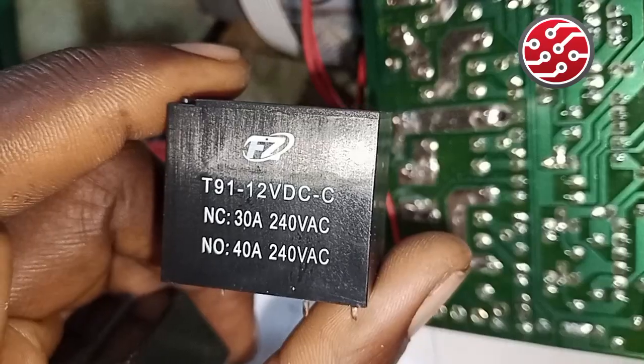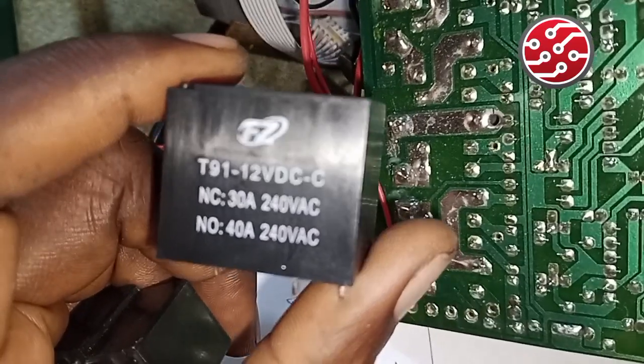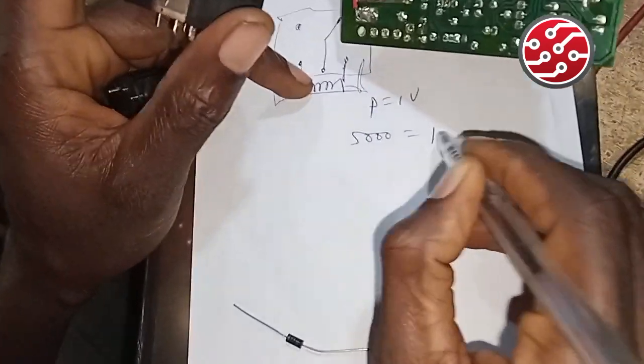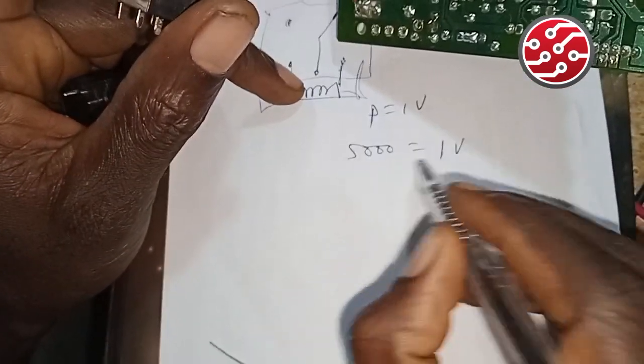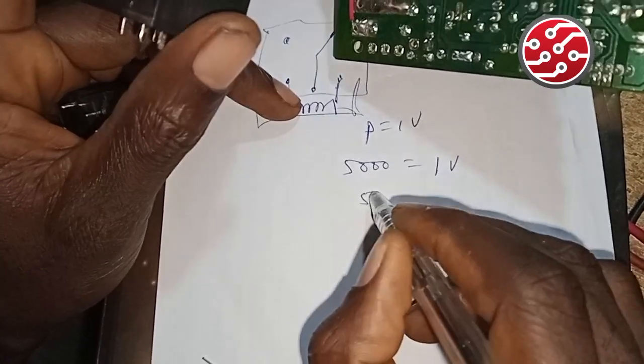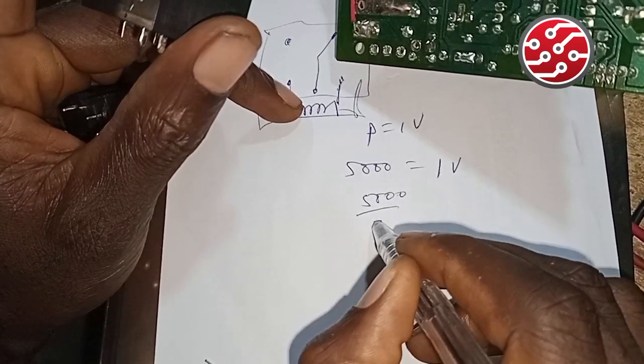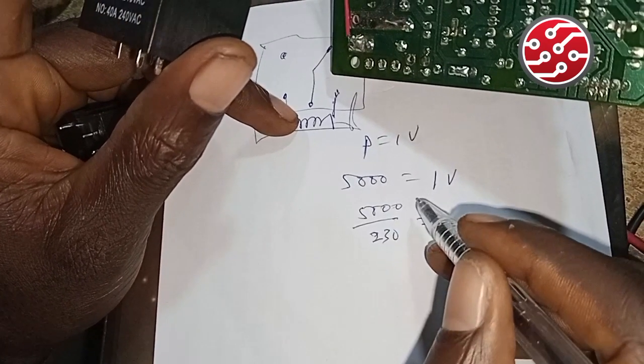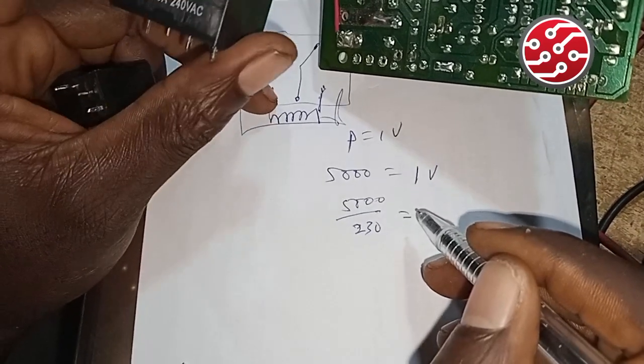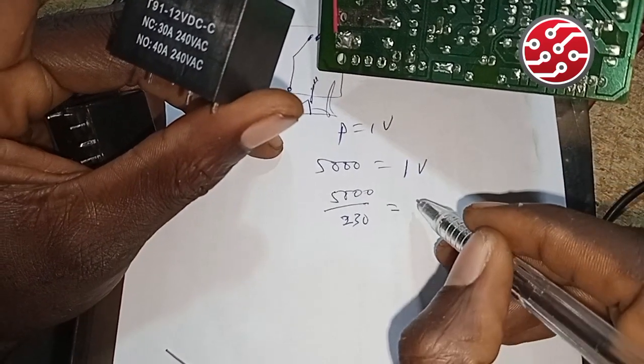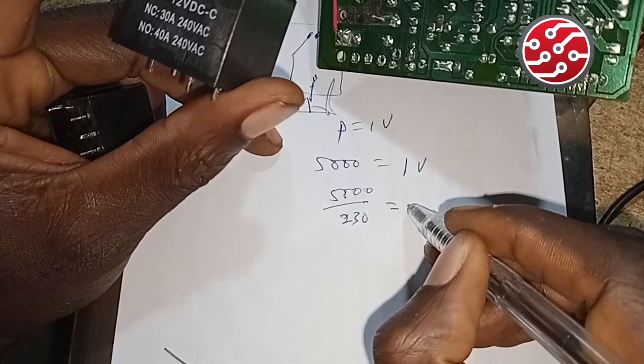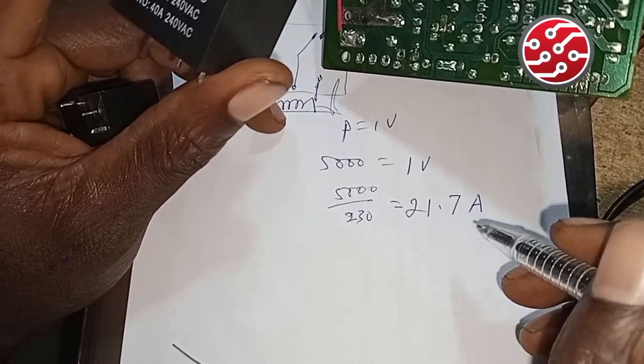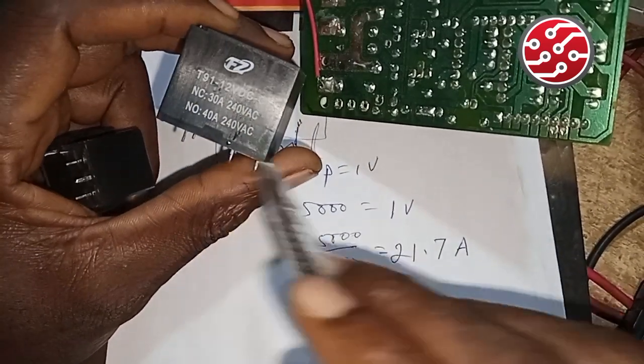If you do your P equals IV calculation - let's say P is 5000, which equals IV, the voltage is 230 - so 5000 divided by 230. What did you get? 21.7 amps.